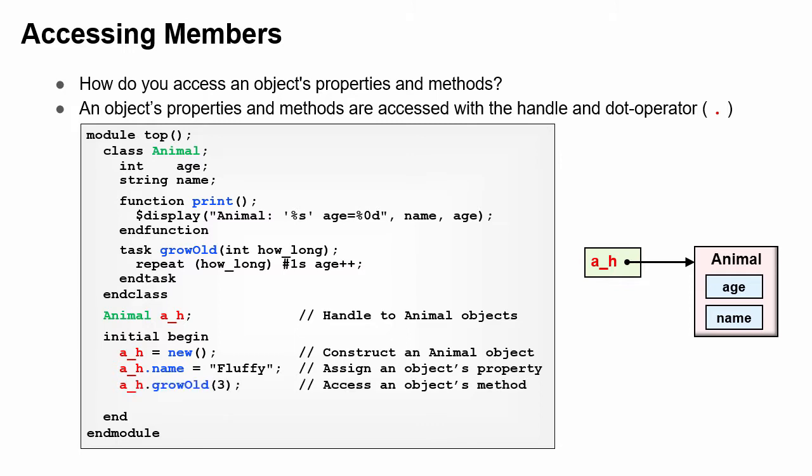Call a task that works on the object's properties. And print the state of the object with your method. Now you can see the name and age of the animal object.